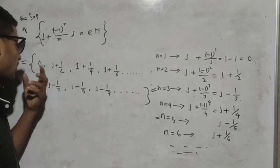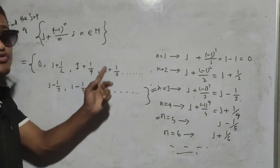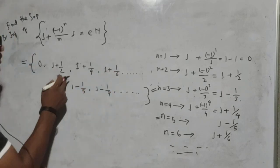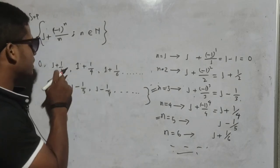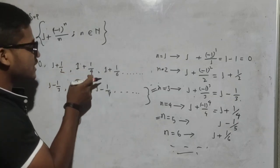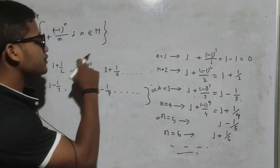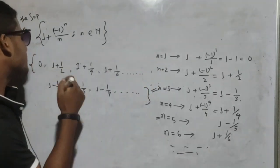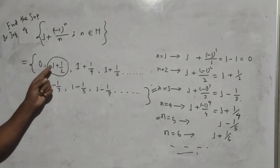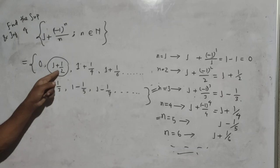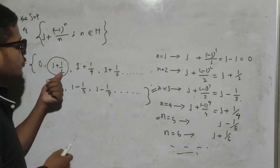You should notice that 1 plus 1/2, 1 plus 1/4, 1 plus 1/6 — a positive quantity is being added to 1. But 1/2 is greater than 1/4, 1/2 is greater than 1/6, 1/2 is greater than 1/8, 1/2 is greater than 1/12. That means 1 plus 1/2 is the term where the largest positive quantity is being added to 1.